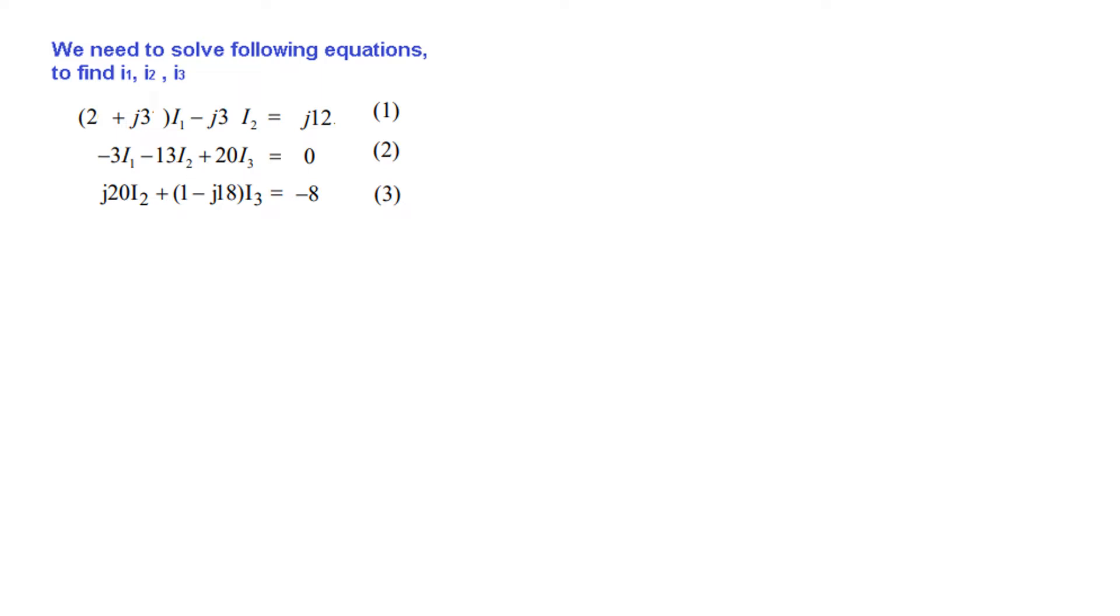This is the equation that we'll be solving. We'll write it straight away in matrix form. This is the matrix equation, and you've learned how to find currents I1, I2, and I3. We'll use this formula: I1 is delta 1 over delta, I2 is delta 2 over delta, and I3 is delta 3 over delta. Let's go to the next slide to see what delta 1, delta 2, and delta 3 are.